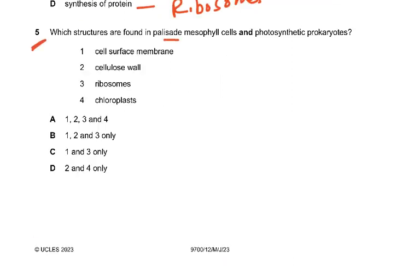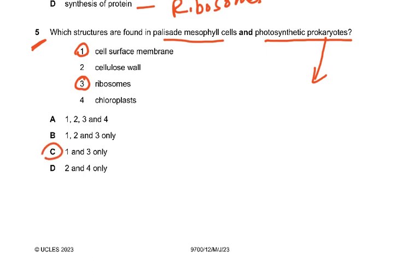Question 5: Which structures are found in both palisade mesophyll cells and photosynthetic prokaryotes? Cell membrane is common to both. Cell wall is only present in palisade mesophyll cells, not in photosynthetic prokaryotes. Ribosomes are present in prokaryotes. Chloroplasts would not be present in prokaryotes because prokaryotes do not have membrane-bound organelles — photosynthetic prokaryotes have thylakoids but not the entire chloroplast. The answer is C.